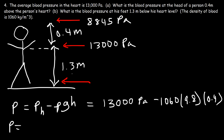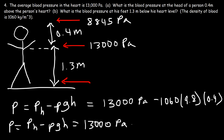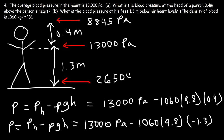We can use the same equation to calculate the pressure at his feet. It's going to be the pressure at his heart, 13,000 Pa, minus the density times g times h. Since we're dealing with a height level 1.3 meters below the person's heart level, h is going to be negative 1.3. So you should get 26,504 Pa.